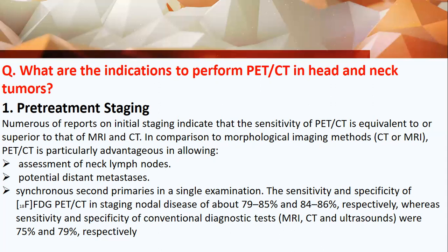The sensitivity and specificity of FDG PET-CT in staging nodal disease is about 79 to 85 percent and 84 to 86 percent respectively, whereas the sensitivity and specificity of conventional diagnostic tests — either MRI, CT scan, or ultrasound — were 75 percent and 79 percent respectively.